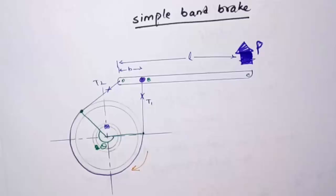When we apply P, the position of the lever will be like this. And band will grab the wheel and offer frictional resistance to its rotation.